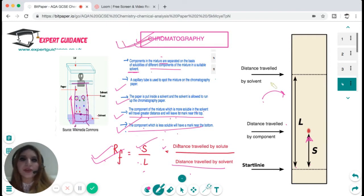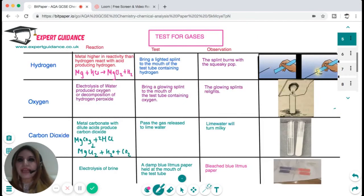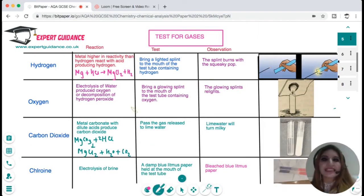Next is very important: the tests for various gases. You should know the tests for hydrogen, oxygen, carbon dioxide and chlorine. Hydrogen is produced when any metal reacts with acid. It forms a salt and hydrogen. How do we test it? We bring a lighted splint at the mouth of the test tube and it burns with a pop sound - it's a squeaky pop test. Oxygen is produced during electrolysis of water or when you decompose hydrogen peroxide.